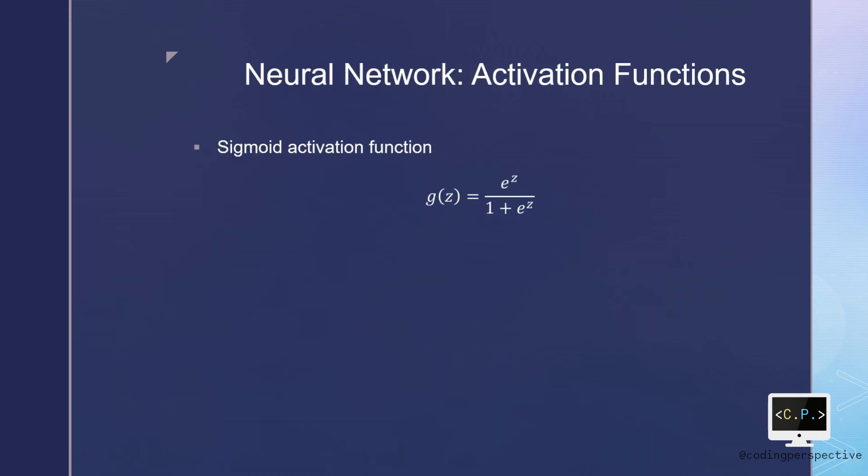Before finishing this video, we can list the possible activation functions that are commonly used in neural network literature. Sigmoid activation function was favored by the early instances of neural networks. The sigmoid activation function is defined as e to the power z divided by 1 plus e to the power z, which is the same function used in logistic regression, to convert a linear function into probabilities between 0 and 1.